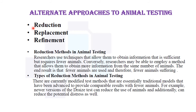In the reduction method, researchers use techniques that allow them to obtain sufficient information while requiring fewer animals. Alternatively, researchers may employ a method that allows them to obtain more information from the same number of animals. The end result is that fewer animals are used and therefore fewer animals suffer.